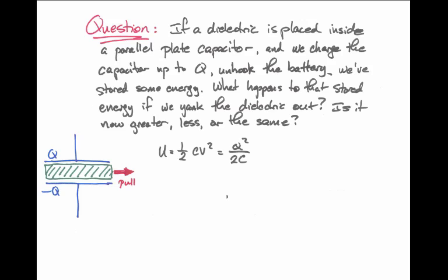We have to remember that the potential energy stored in a capacitor is ½CV². But that's a somewhat complicated formula to use because we know that when we pull the dielectric out of the capacitor, the voltage will change and the capacitance will change.